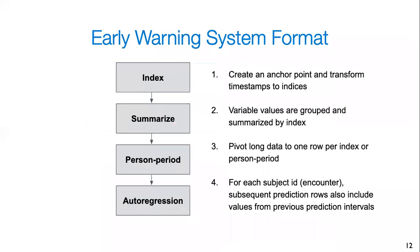As I mentioned previously, my work is related to early warning systems. So essentially what this package does is it takes the data and it creates an index or an anchor point that transforms those timestamps into indices. It summarizes those indices at the index level, and then it pivots them from long data into one row per index or person period, which I'll show you in just a moment.